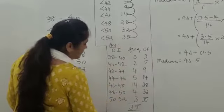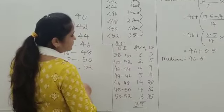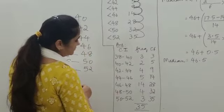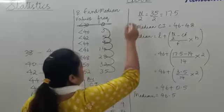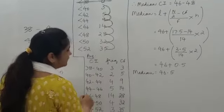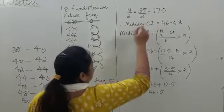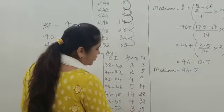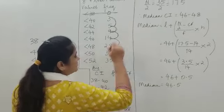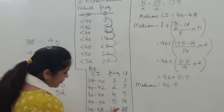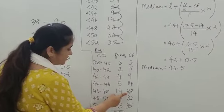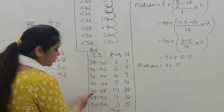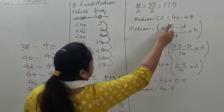Now we have the table with class intervals, frequencies, and cumulative frequencies. We start by finding n/2: the value of n is 35, so 35 divided by 2 equals 17.5. Now look at the cumulative frequency column and find the value just greater than 17.5, which is 28. The corresponding class interval is the median class, so 46 to 48 is the median class interval.